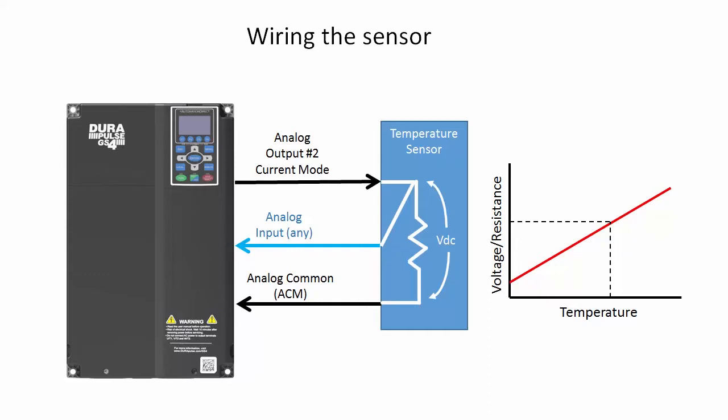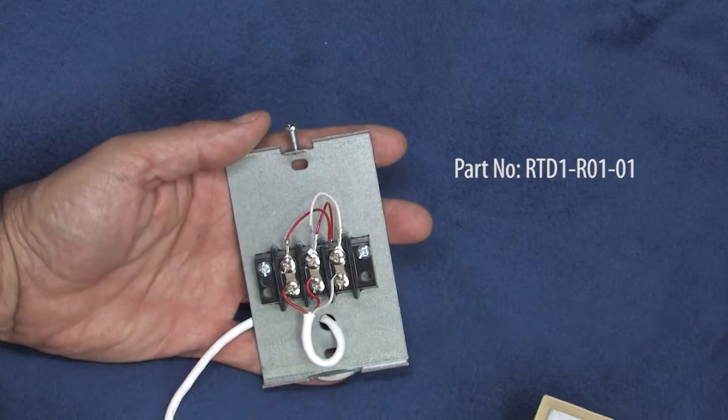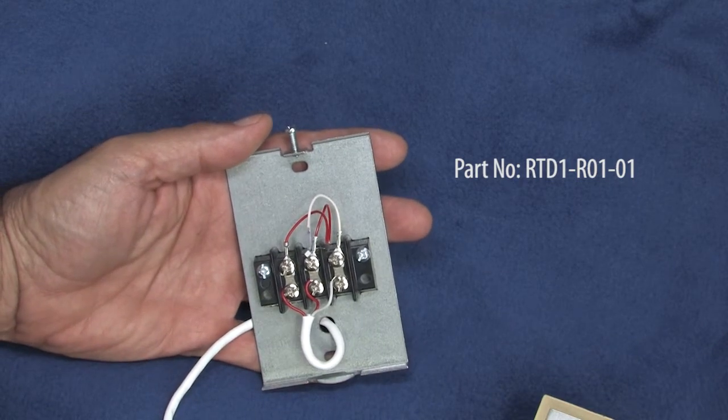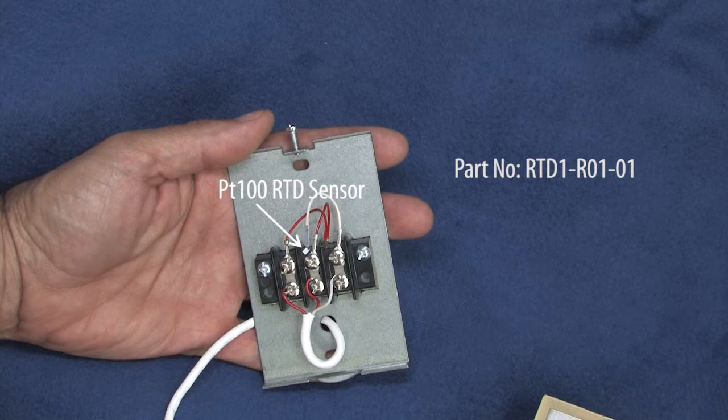By the way, could you drive this sensor with your own current source? Sure. You might want to do that if you are already using analog output 2 for something else. But in general, using the GS4's current output feature is so easy and convenient, there's usually no need to spend the extra money on an external supply. I'm using the RTD in this room temperature sensor from AutomationDirect simply because that's what I had laying around, but any PT100 RTD will do.